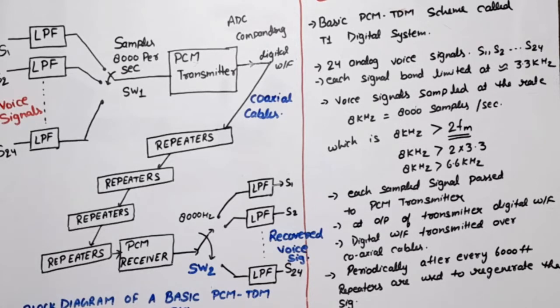This is the working of this block diagram. At the receiver end, we get 24 recovered voice signals. Now let's look at some important terms used in the PCM-TDM system.